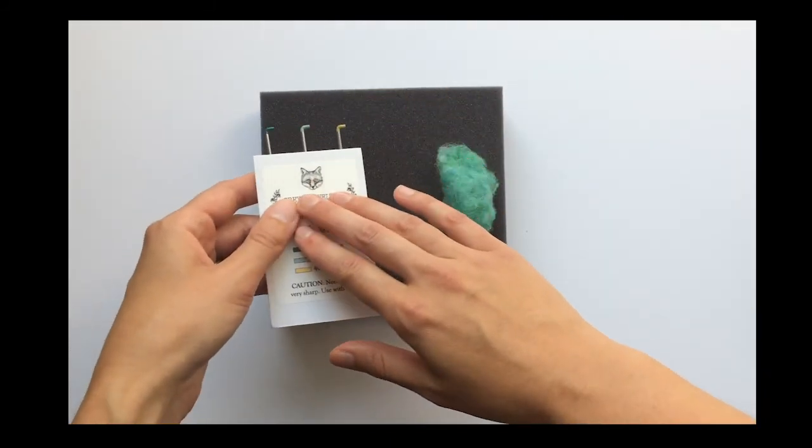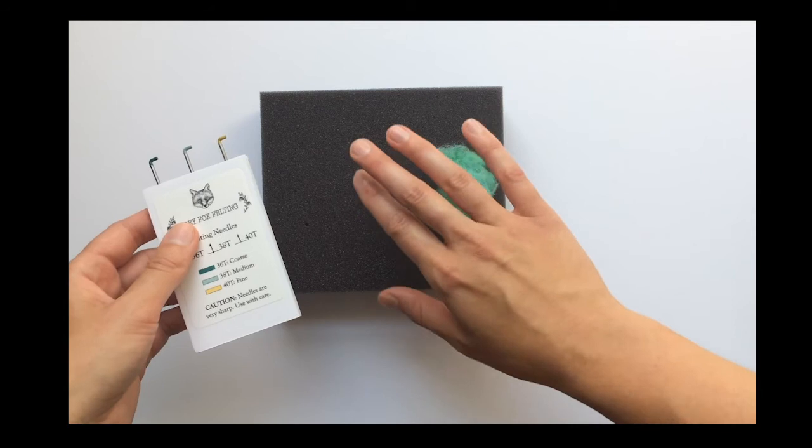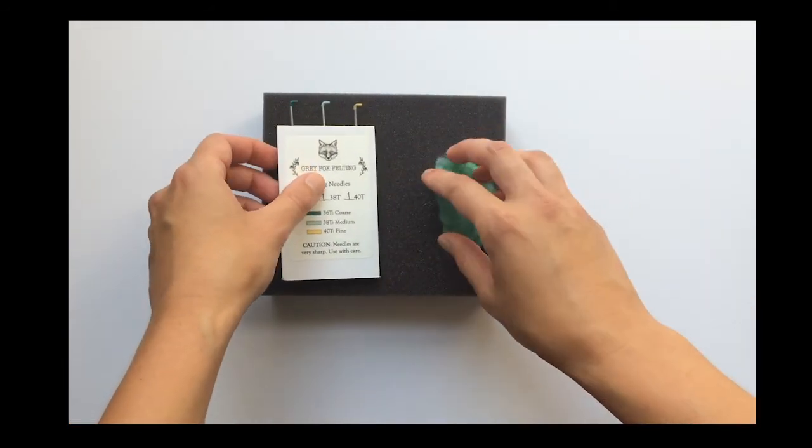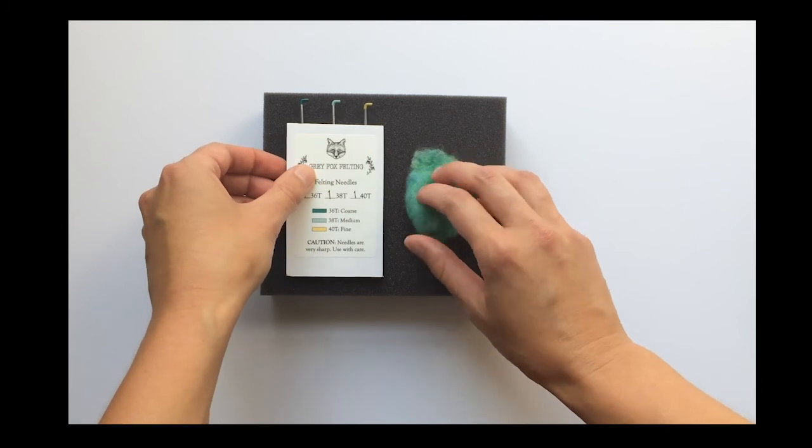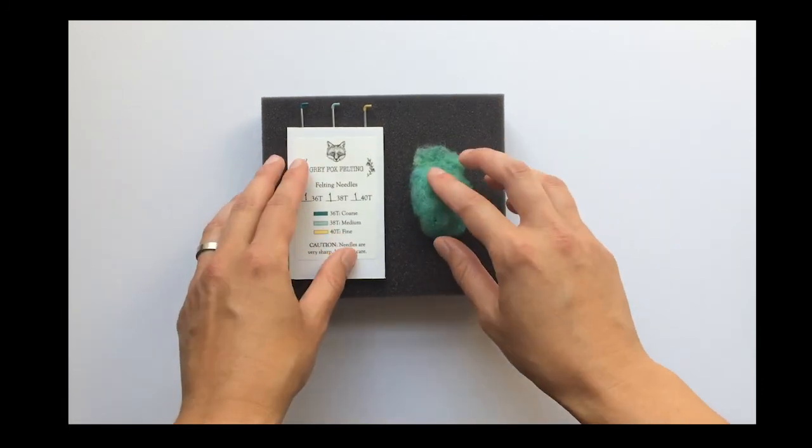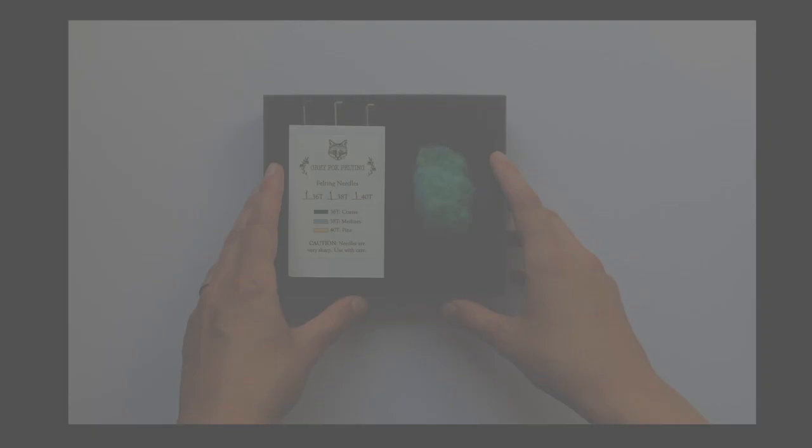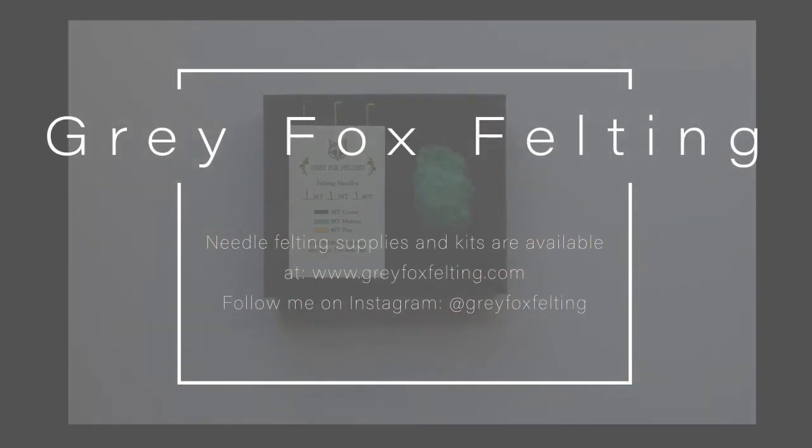So the needles, all the wool, as well as the foam pads that I use are all available on my website, grayfoxfelting.com. You can also reach out to me there with any questions you have through my contact page. So next up, I'm going to show you how to blend some colors together.